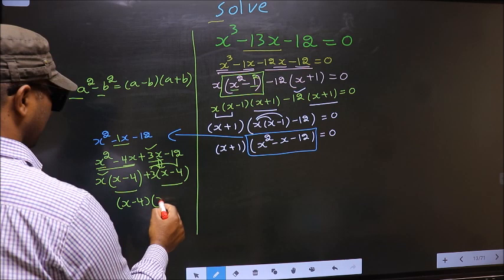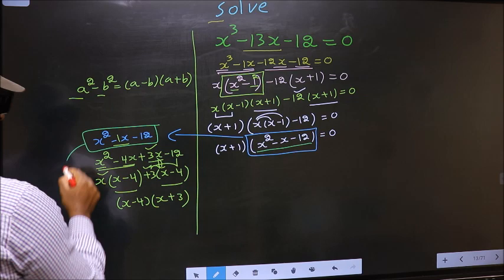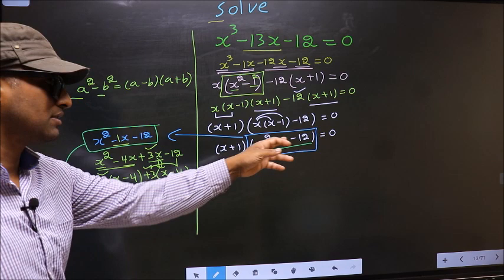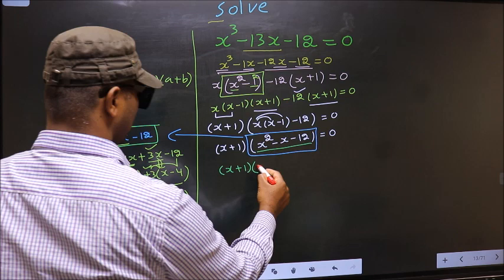In place of the quadratic we now write the factored form. So the full equation becomes (x plus 1)(x minus 4)(x plus 3) equal to 0.